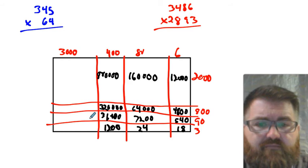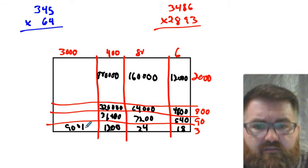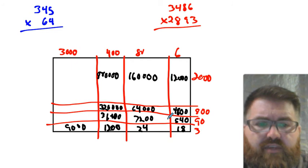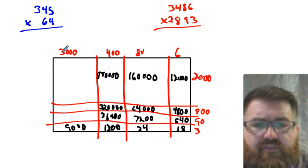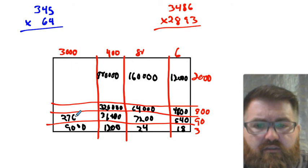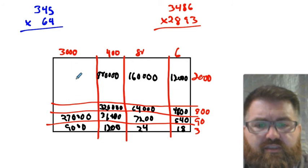3,000 times 3 — that's in the 1,000s, so it's going to be 9,000. 3,000 times 90 — that's 1,000s times 10s, that's 10,000s. 3 times 9 is 27, so that's 270,000.